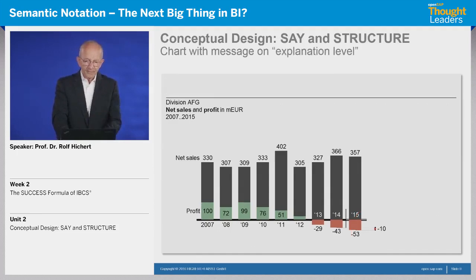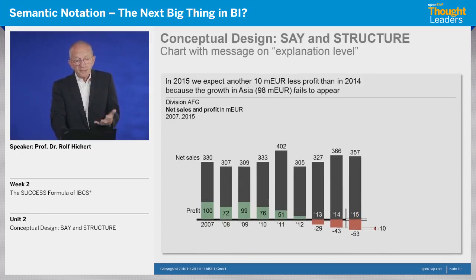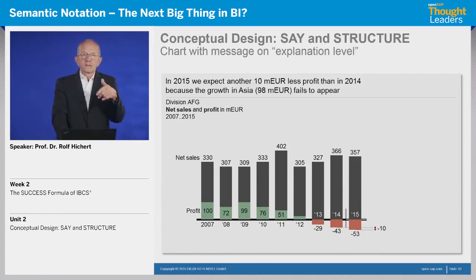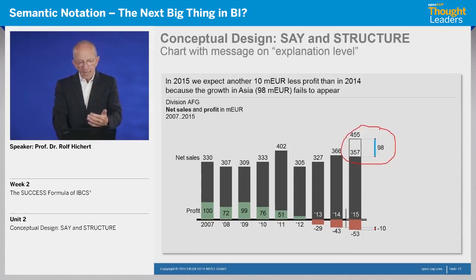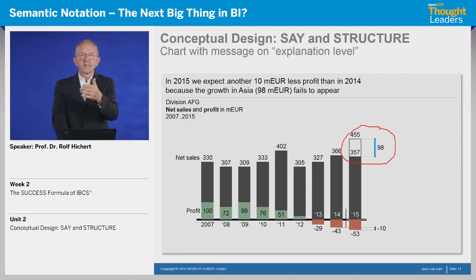Now we talk about the explanation level. Explanation means we give a reason for what happened — because the growth in Asia fails to appear. And again, we highlight this and show that there is 98 million which is missing.